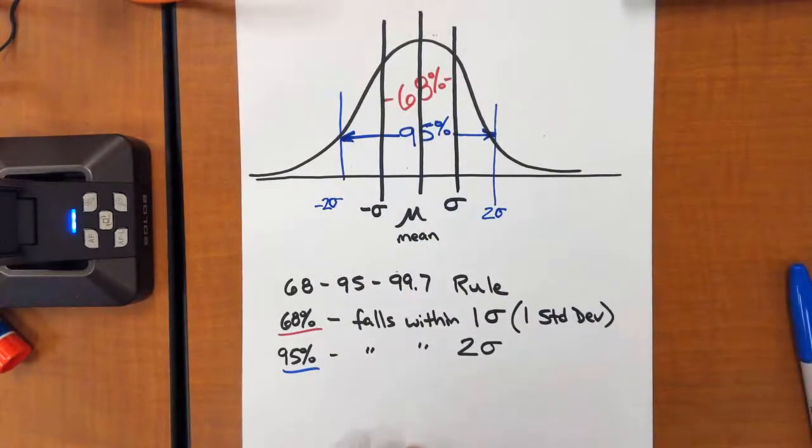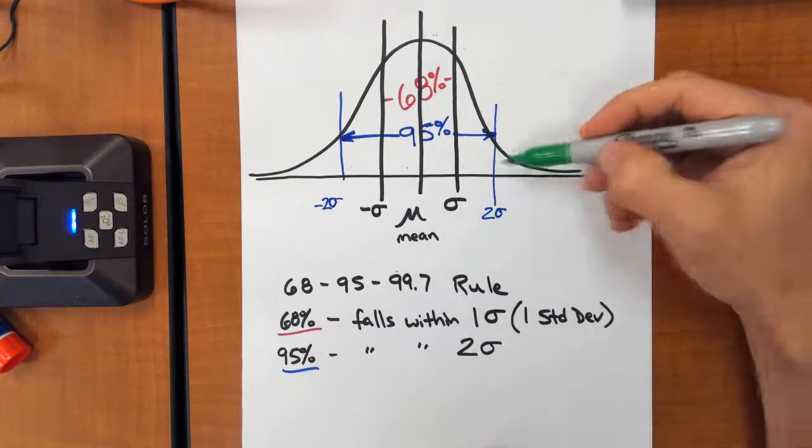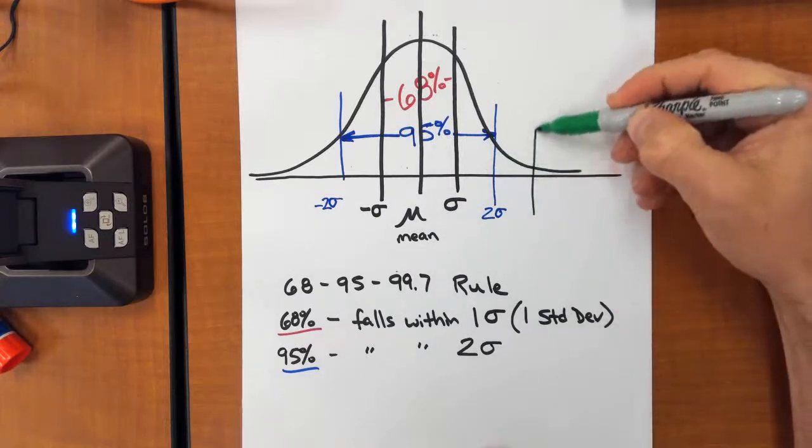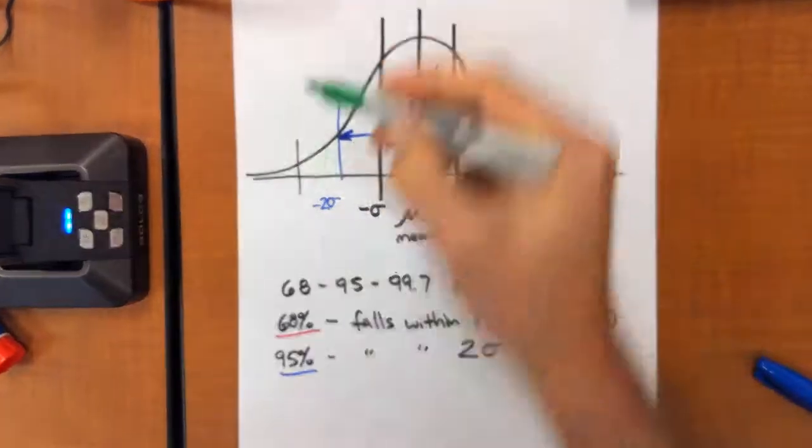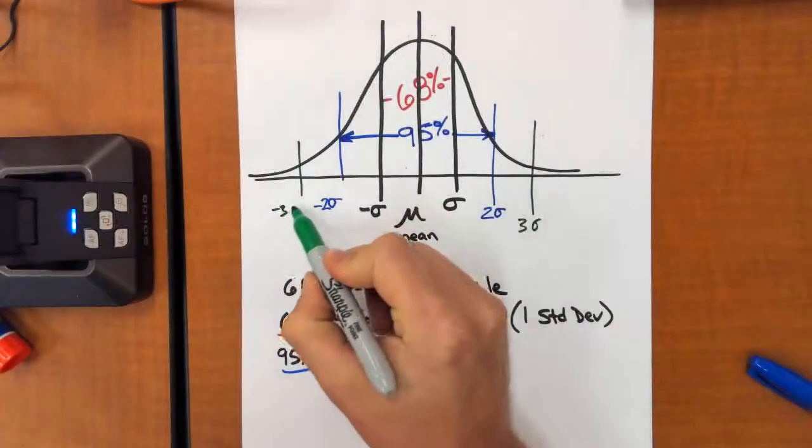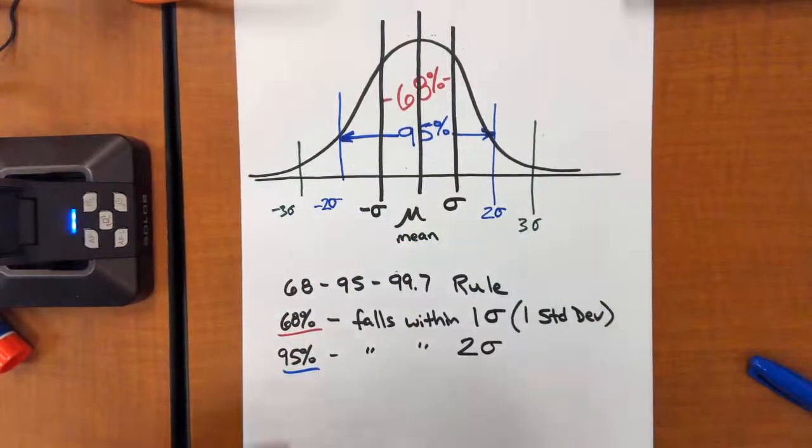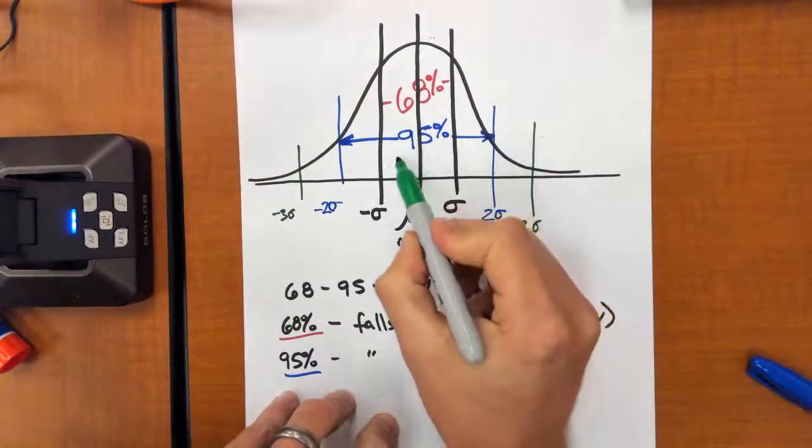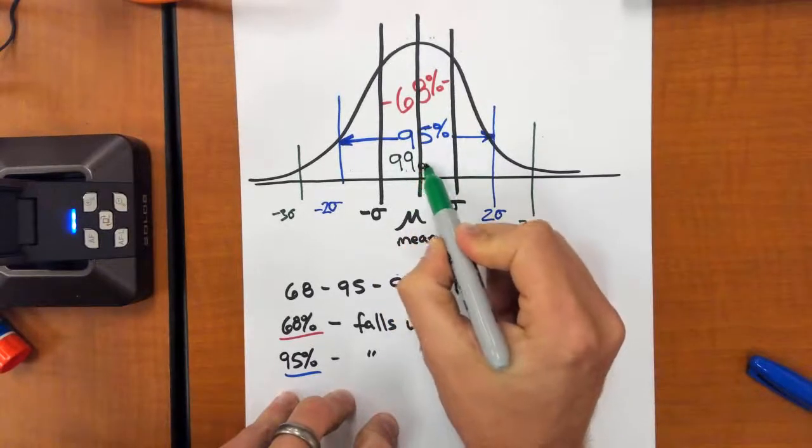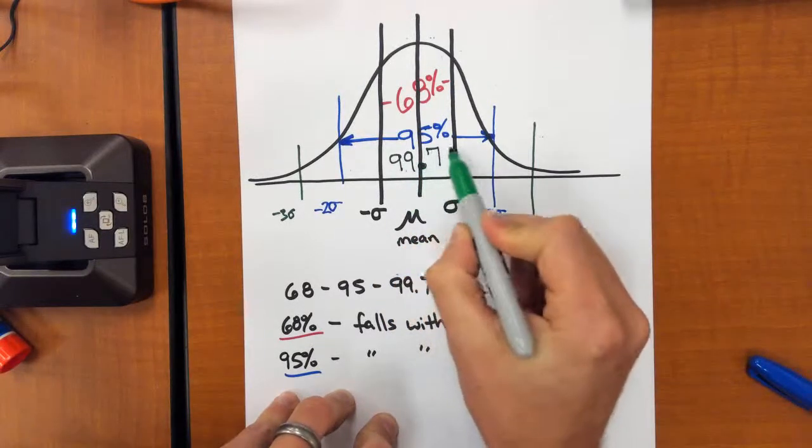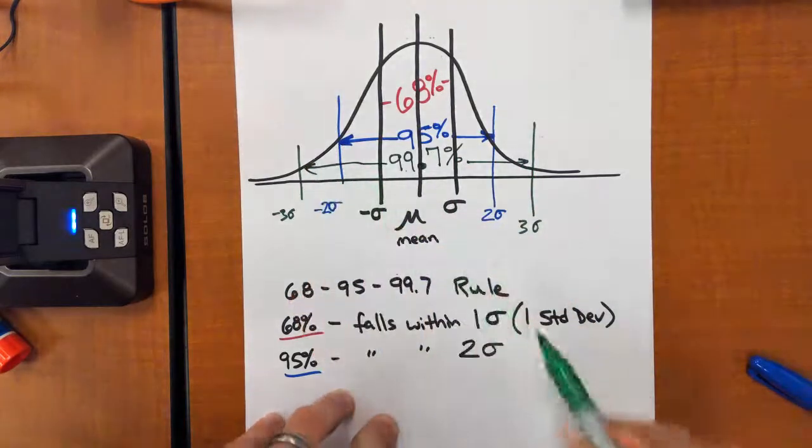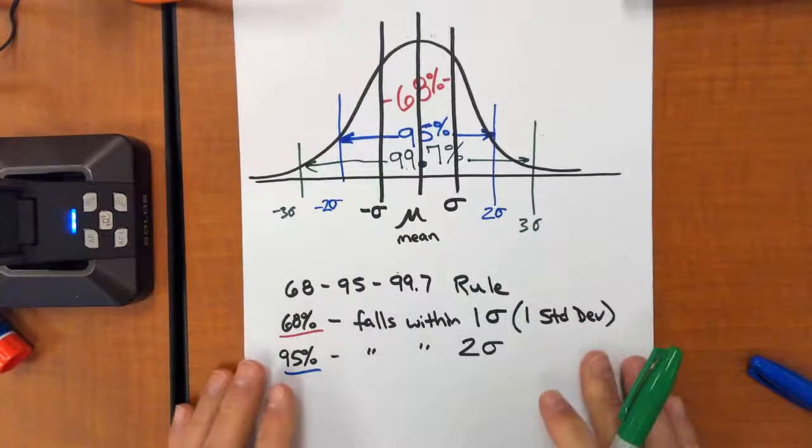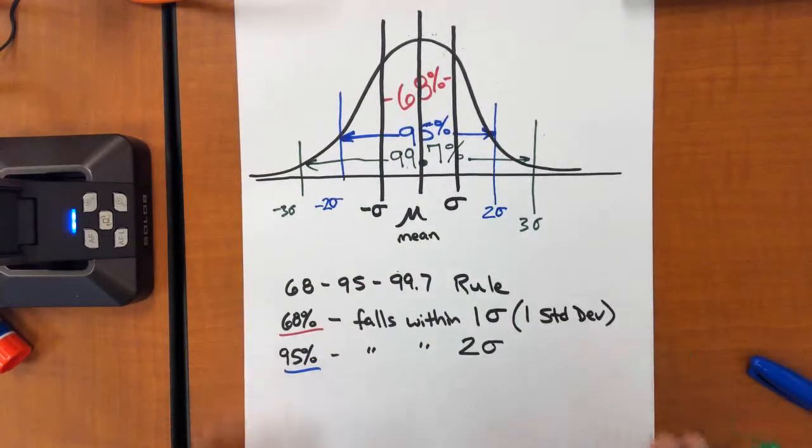And then if we were to go out three standard deviations, so that same length again, this would be negative three standard deviations, that we're going to capture 99.7% of our values. So that is called the empirical rule, or the 68, 95, 99.7 rule.